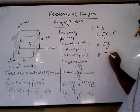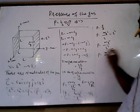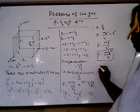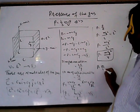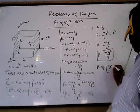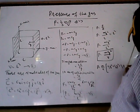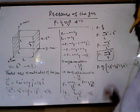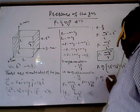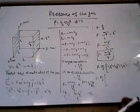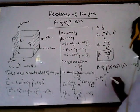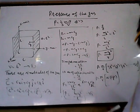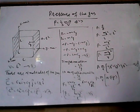Pressure for a single molecule is force divided by area: p = (mcy²/l) / l² = mcy²/l³ = mcy²/v. Since there are N molecules each with different velocity components, the total pressure along the y-axis is p = m/v · (c1y² + c2y² + ... + cNy²) = mN/v · c²y_avg, where c²y_avg is the mean square speed along y. This is equation number four (extended).